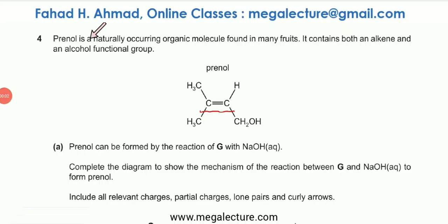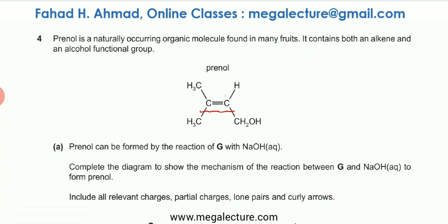Prenol is a naturally occurring organic molecule found in many fruits. It contains both an alkene and an alcohol functional group — there is a double bond and an OH group in this molecule.